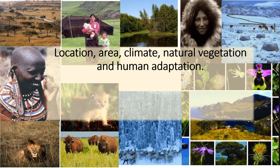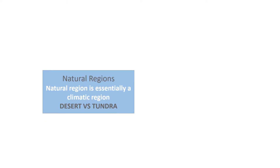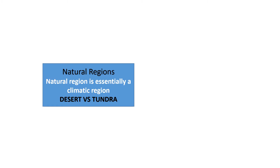Location, area, climate, natural vegetation and human adaptation of the equatorial region — that is the region near the equator — the tropical desert near the equator, and then tropical monsoon like India, that kind of climate. What exactly we have to understand is: what is a natural region? It is a region based on climate.